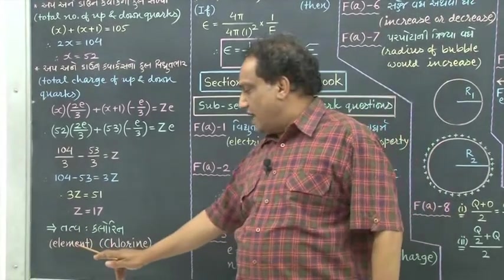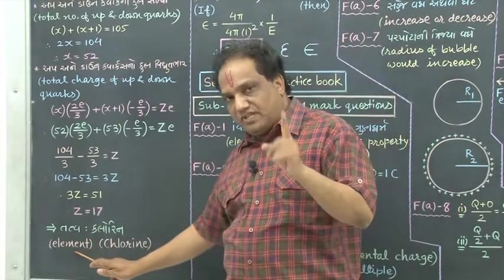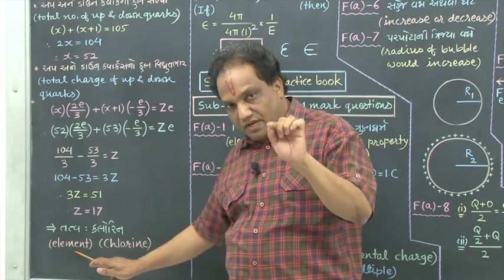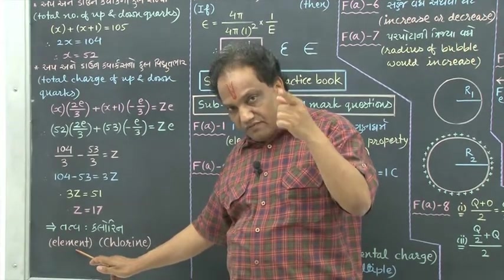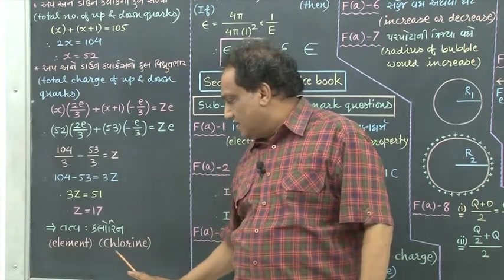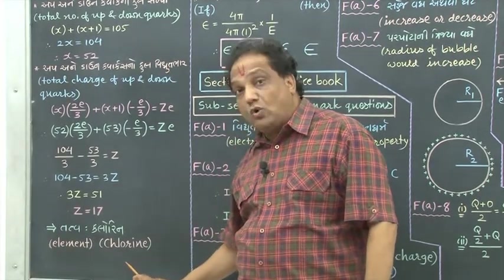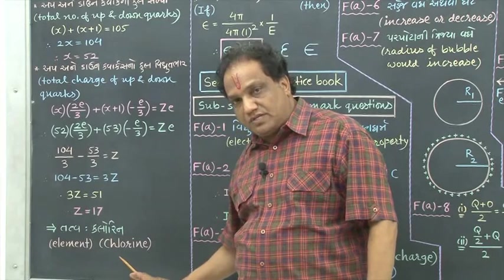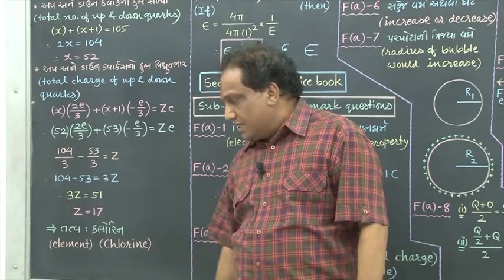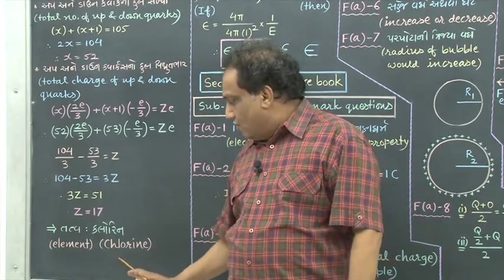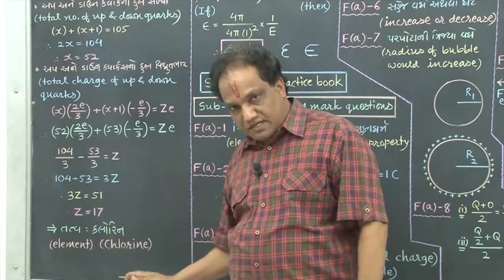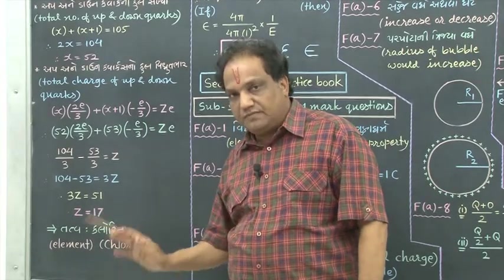Now tell me, what is that element which has atomic number 17? It is none but chlorine. So the type of element which is asked in the statement of the numerical example I had given you — that type of element is none but chlorine. So the answer is chlorine. I hope some of you might have got this answer.